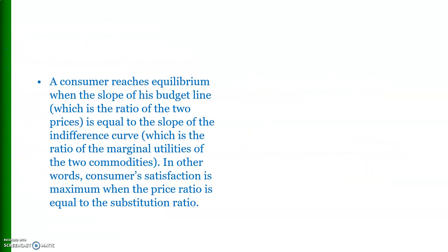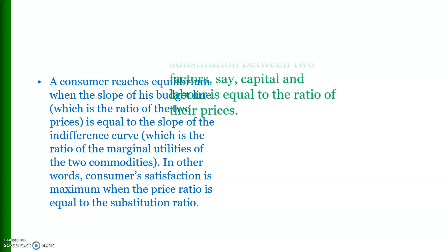A consumer reaches equilibrium when the slope of the budget line is equal to the slope of the indifference curve. In other words, the consumer's satisfaction is maximum when the price ratio is equal to the substitution ratio.